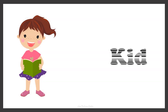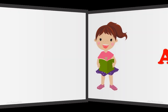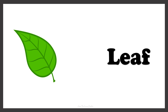Now this one is KID. To find the article that comes before the word KID, we have to check the first letter of this word. KID starts with the letter K, which is a consonant, so we use the article A. This is A KID. Now here we have the picture of LEAF. Let's check out the first letter of the word LEAF. The word LEAF starts with the letter L, which is a consonant, so we use the article A. This is A LEAF.